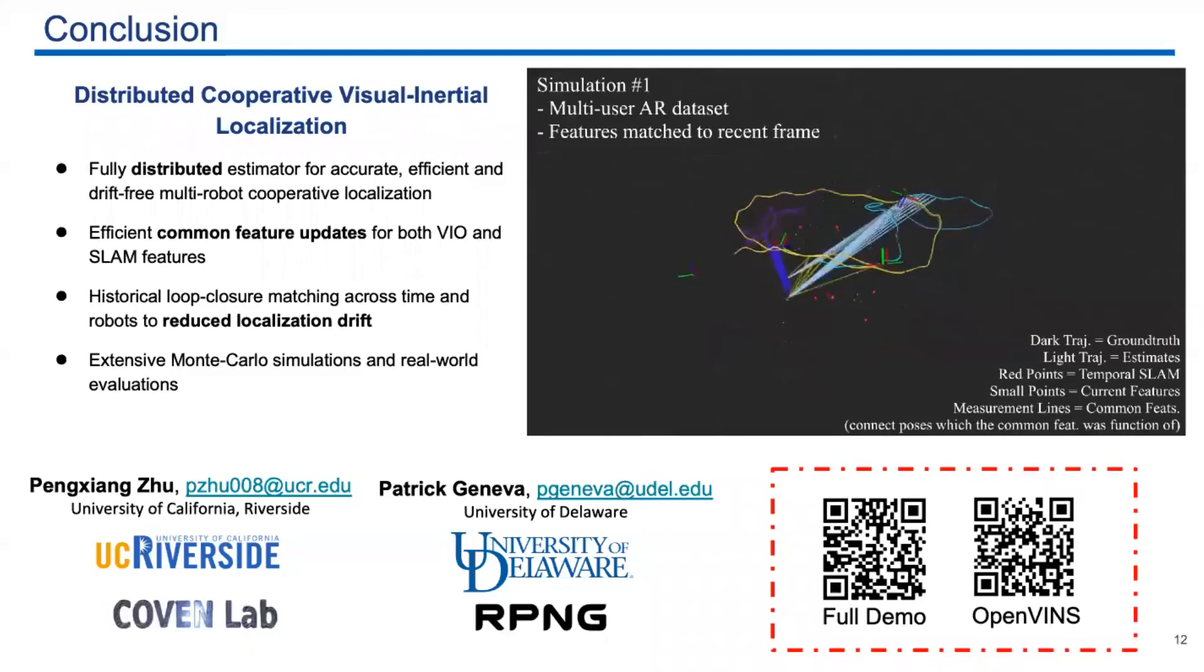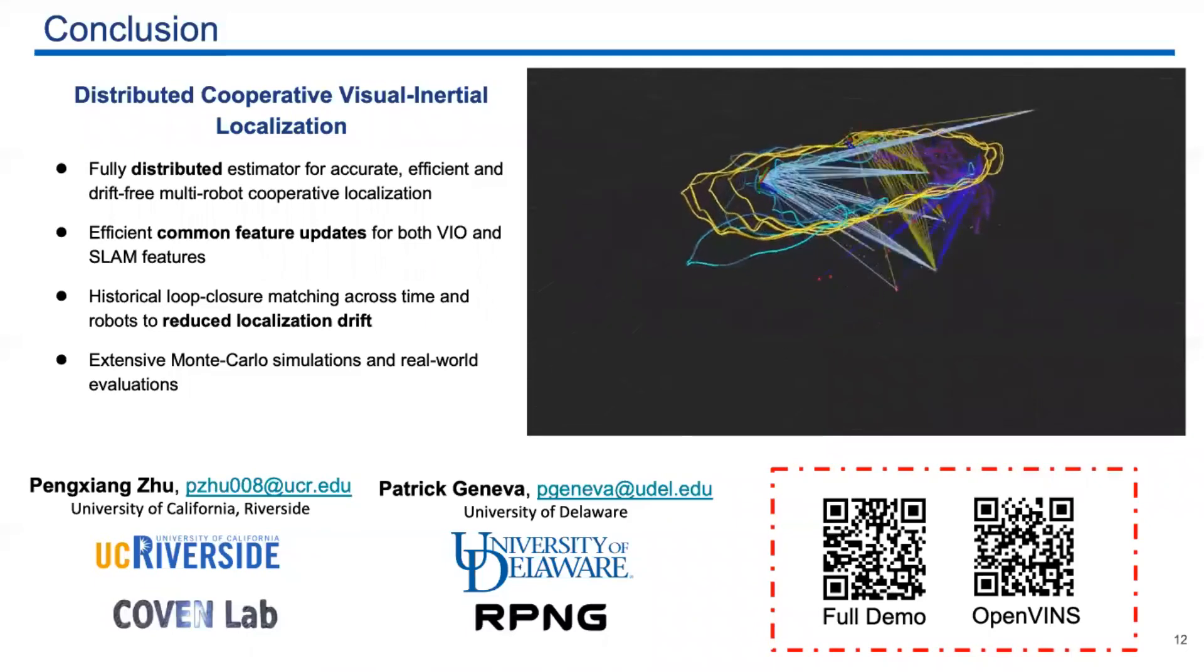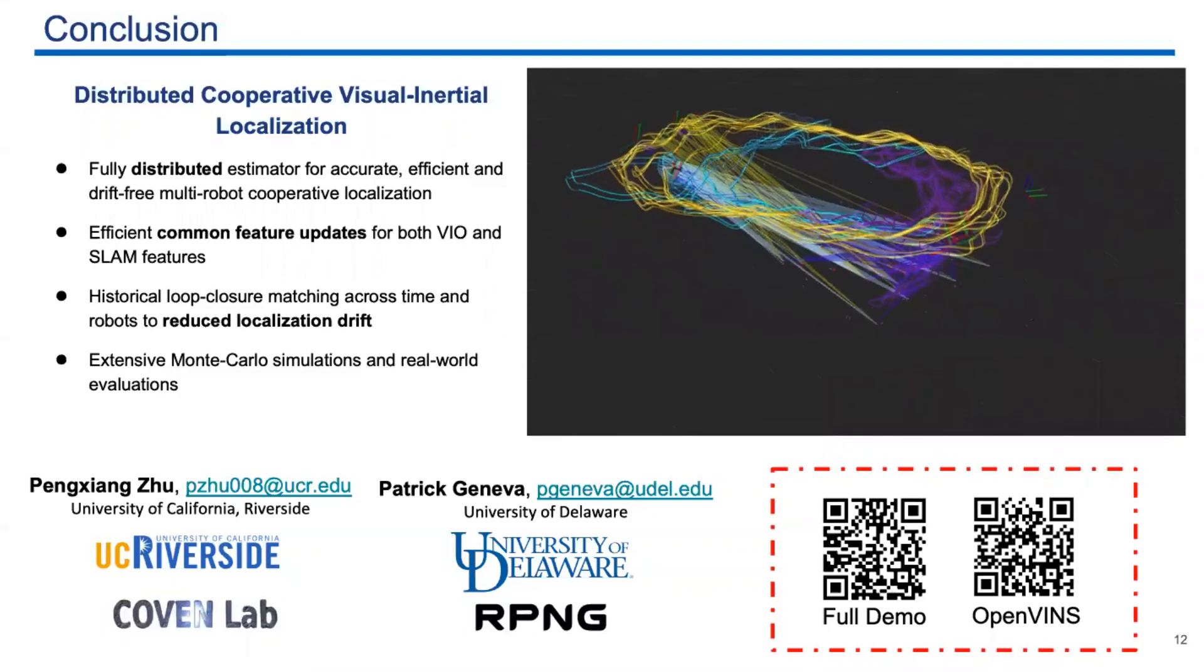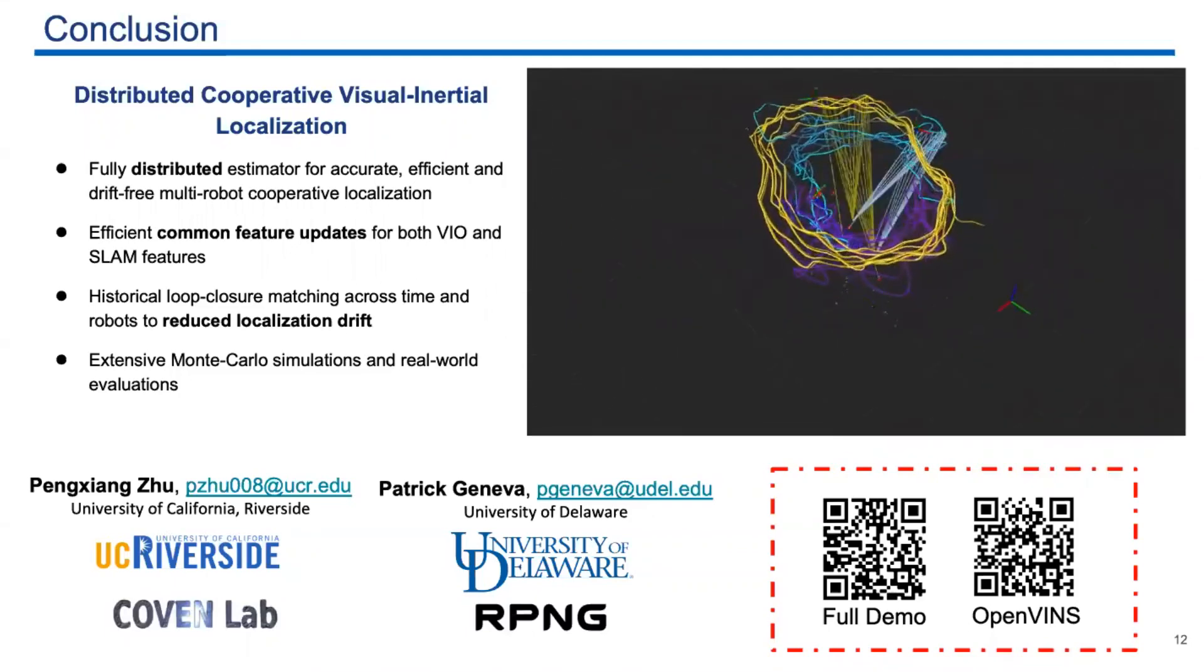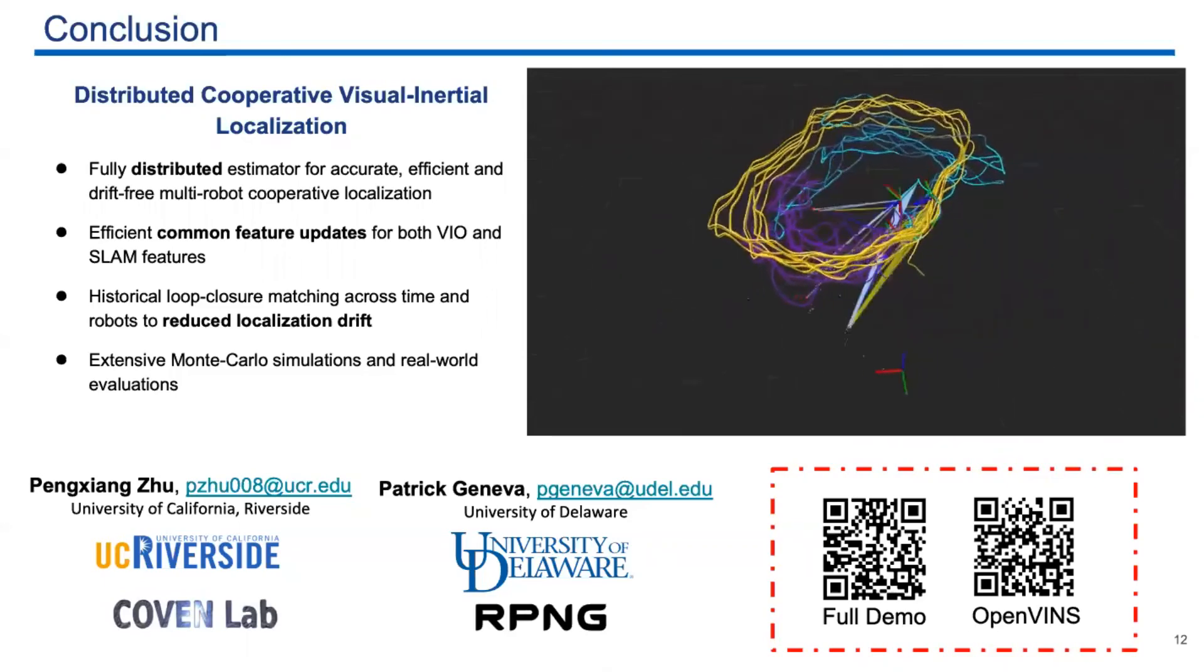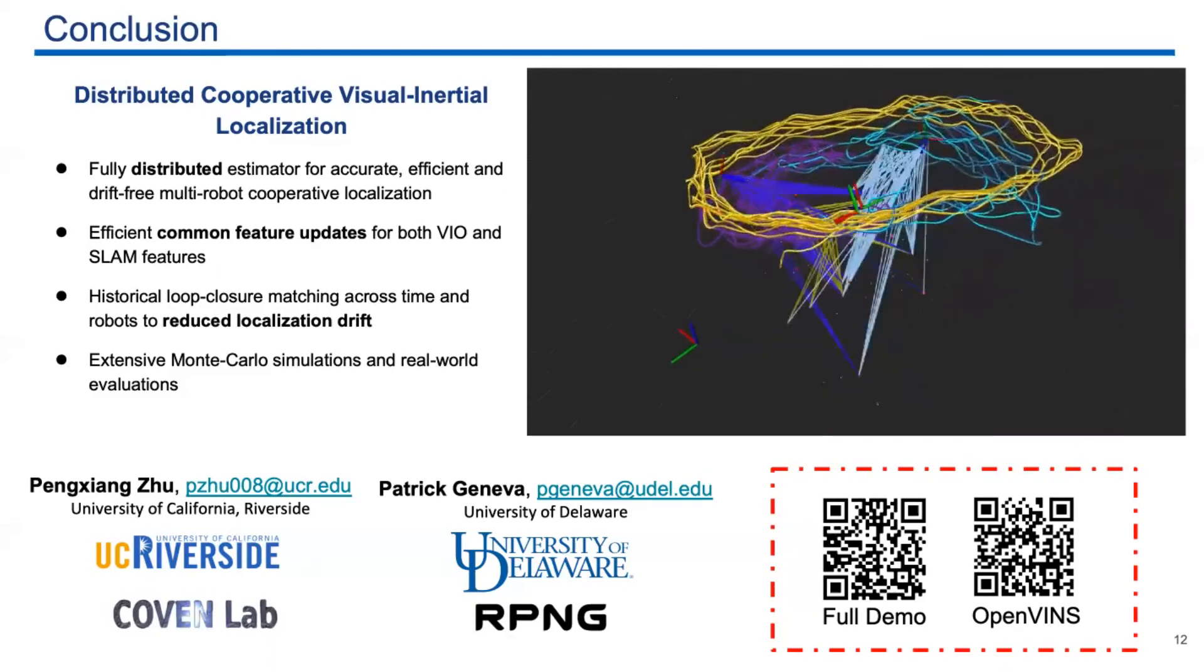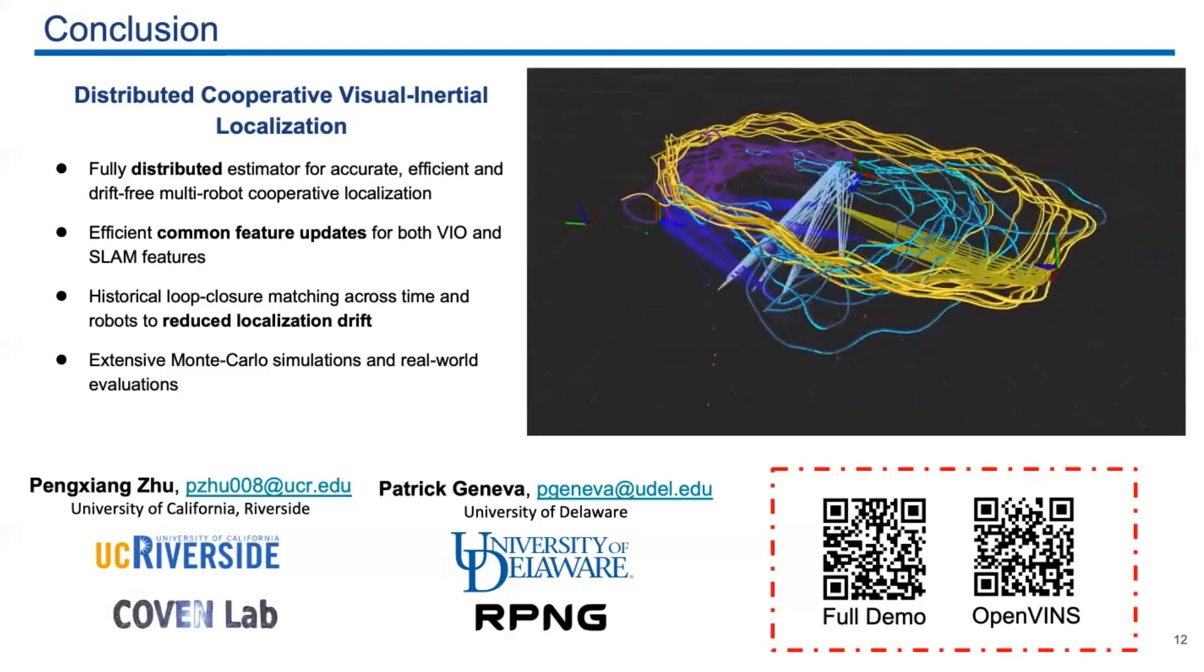So in this paper, we propose a fully distributed estimator for accurate, efficient and drift-free multi-robot cooperative localization. And we further propose efficient common feature updates and algorithms for loop closing across time and robots to reduce long-term navigation drift. And we performed extensive simulations and real-world evaluations. Thanks. If you have questions, feel free to contact me or Patrick. Thank you.